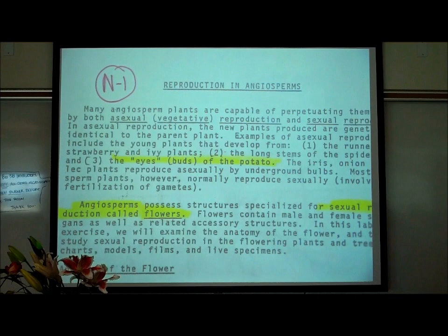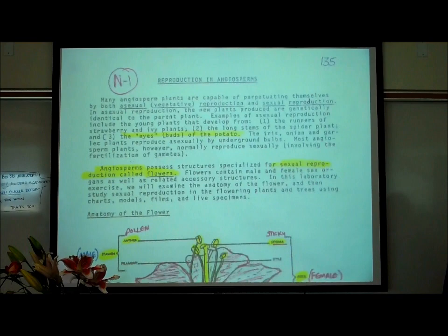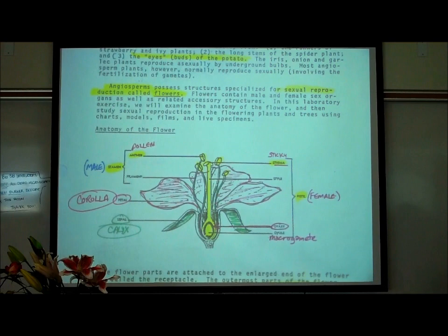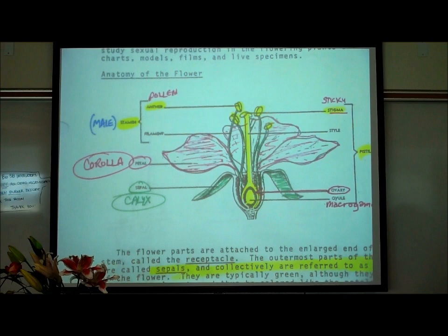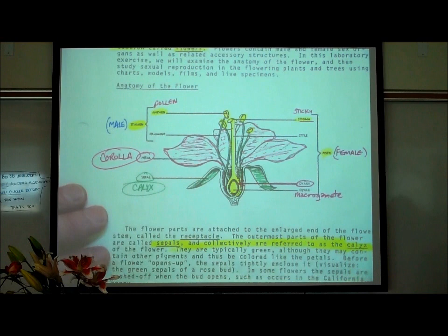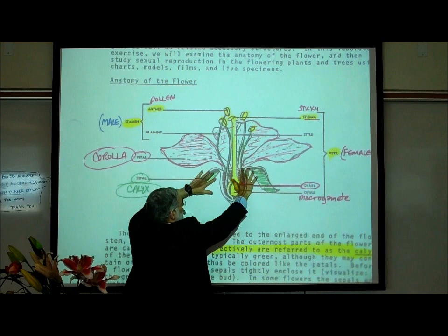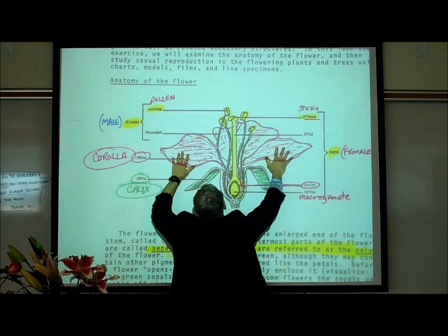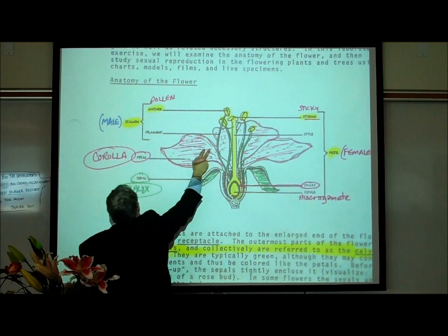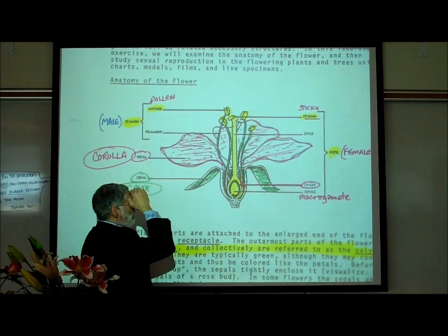Obviously, the reason why flowering plants have flowers is that's how they reproduce in most cases. So let's talk about the structure of a flower. Looking at the picture, the principal parts are: the outer structures called sepals, then the petals, then the male parts called stamens, and in the very center of the flower is the female part called the pistil.